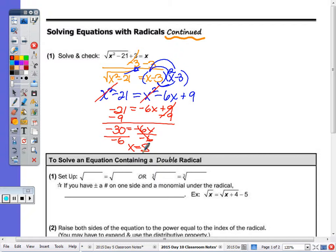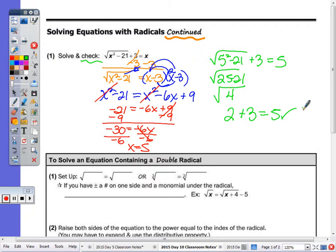It does say to solve and check. Is the square root of five squared minus 21 plus three equal to five? Five squared is 25. So 25 minus 21 is four. Square root of four is two. And two plus three is five. So it does check.